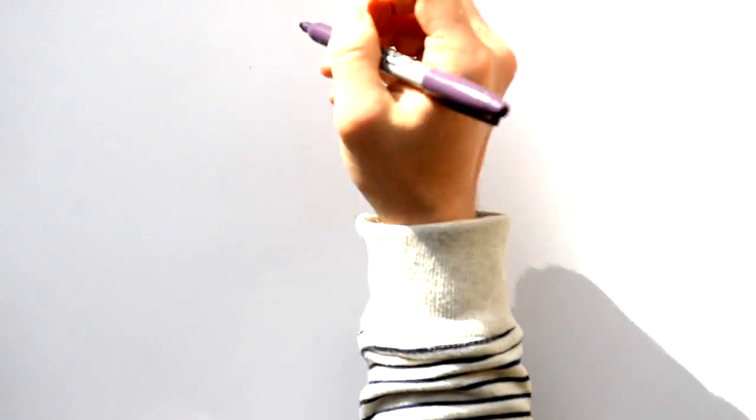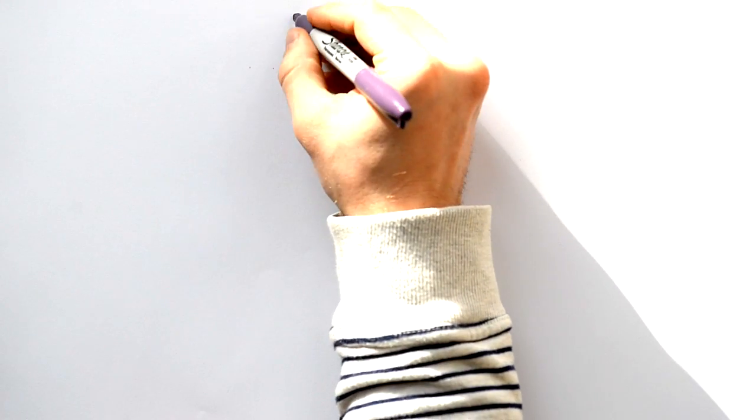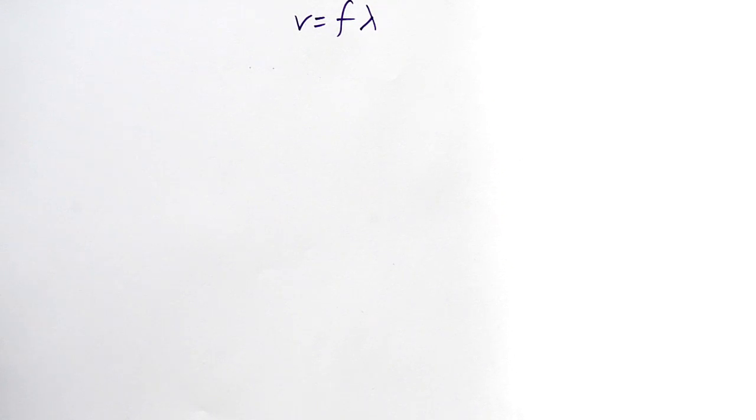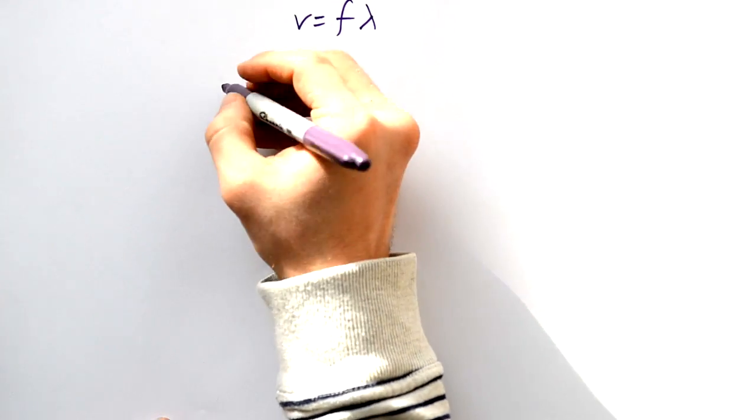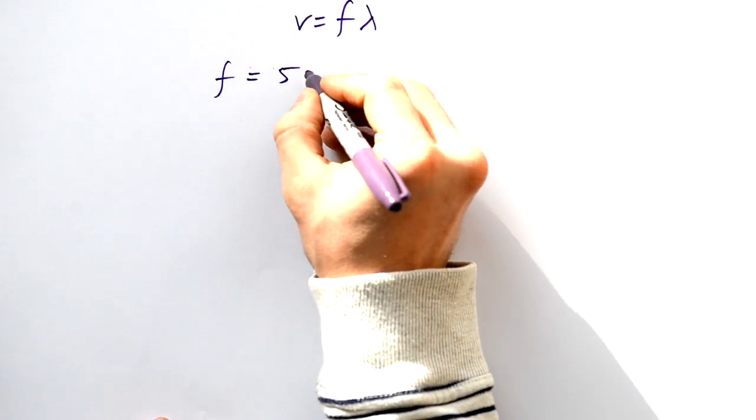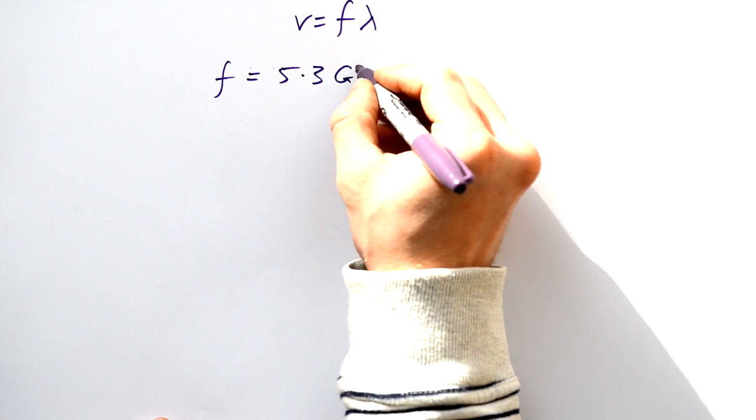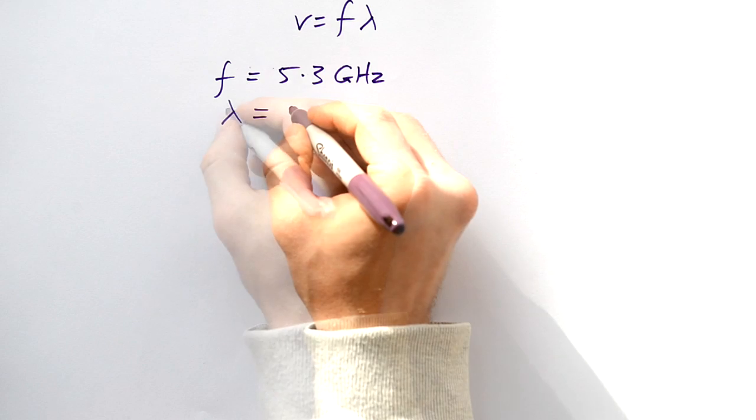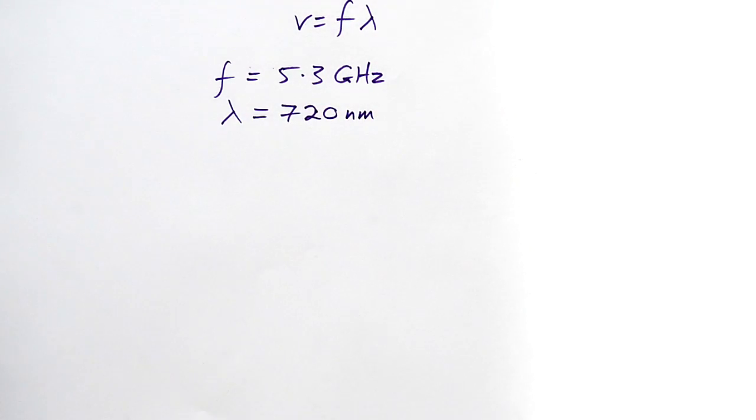Let's say that we're trying to find the speed of a wave. We do that with the equation v equals f lambda, or c equals f lambda, depending on your personal preference. Wave speed equals frequency times wavelength. Now let's say that I have a frequency that is 5.3 gigahertz and I have a wavelength that is 720 nanometers.